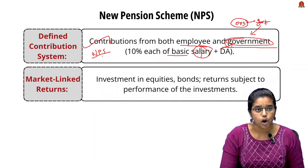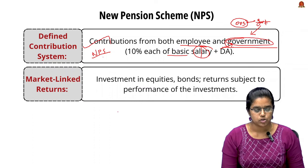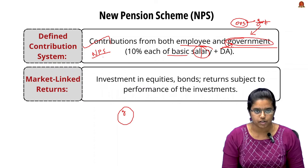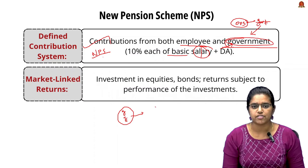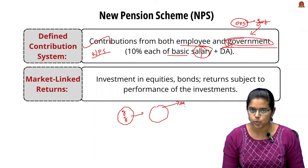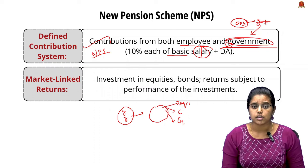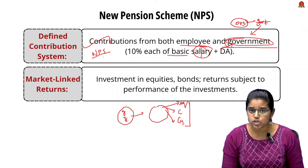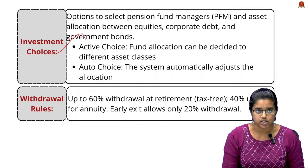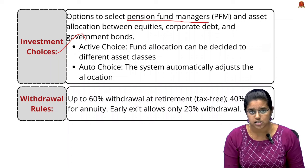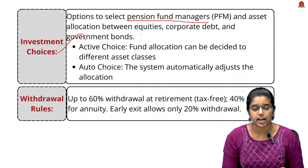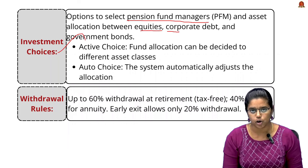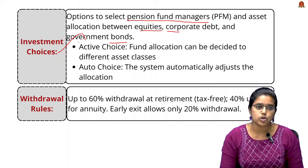The pooled contributions are invested in equity, corporate bonds, or government bonds. The employee has investment choice — they can select their pension fund managers and decide the proportion of funds allocated to each asset class. There are two options: the active choice, where the employee decides the allocation, and the auto choice, where allocation is automatically adjusted based on age — equity for younger subscribers, and more secure instruments like government and corporate bonds as they age.